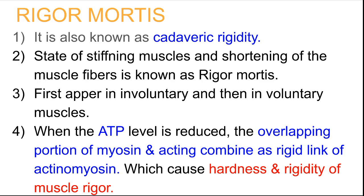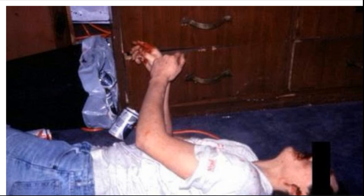Now we will go with rigor mortis, also known as cadaveric rigidity. Rigor mortis is defined as the stiffening of muscles and shortening of muscle fibers after death. It first appears in involuntary muscles and then in voluntary muscles. The phenomenon occurs because when the ATP level is reduced, the overlapping portions of myosin and actin combine as a rigid link of actomyosin, causing hardness and rigidity of the muscle.